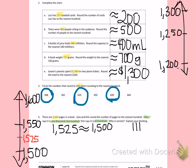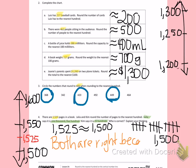100, 200, 300, 400, 500, 600, 700, 800, 900, 1,000, 1,100, 1,200, 1,300, 1,400, 1,500. 15 hundreds would give me 1,500. So both girls are correct, both are right because the numbers are equal.